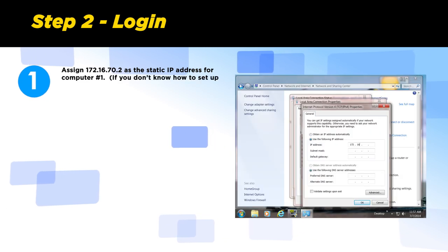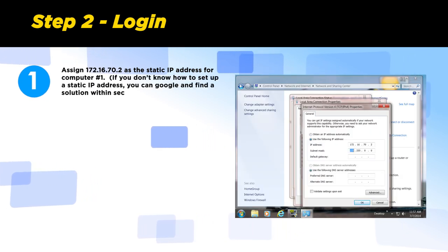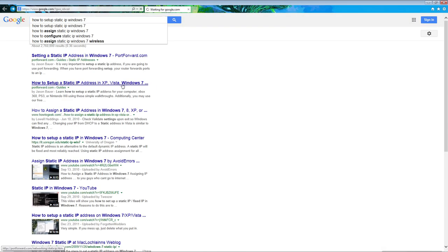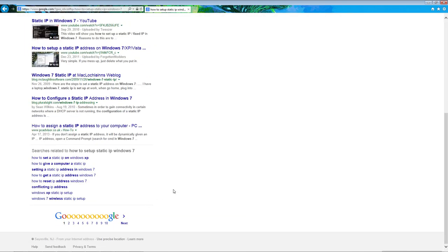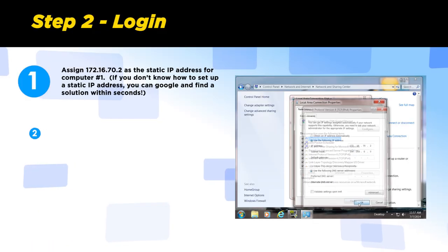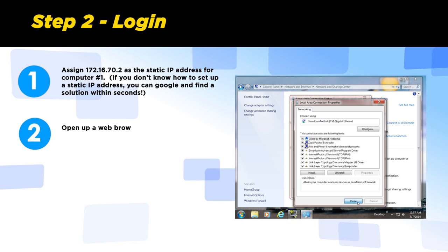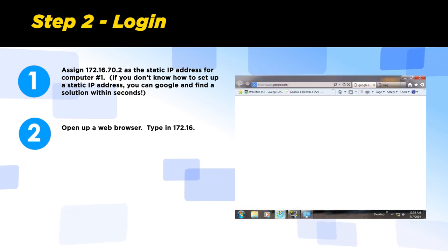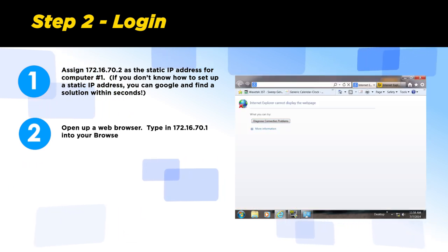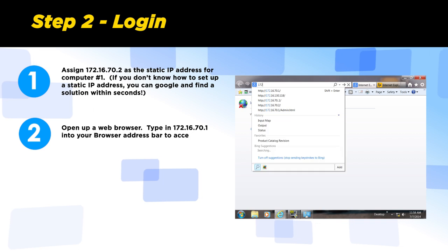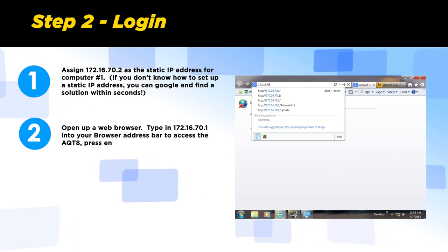Step 2: Login. Assign 172.16.70.2 as the static IP for the control computer. If you do not know how to set up a static IP, you can Google it to find the solution within seconds. Open up the web browser. Type in 172.16.70.1 into your browser address bar to access the AQT8. Press Enter.